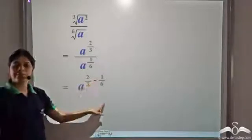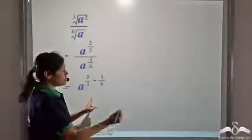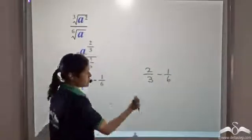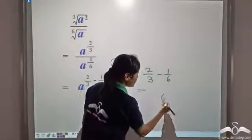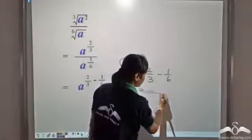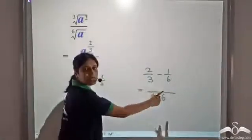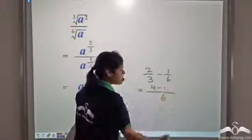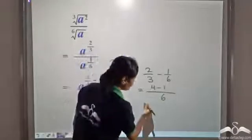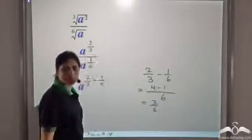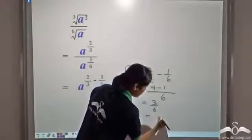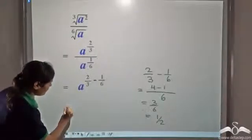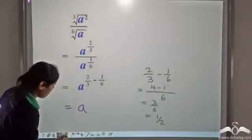Now 2 by 3 minus 1 by 6. The LCM of 3 and 6 is 6, so the denominator is 6. The denominator of the first fraction is multiplied by 2, so we multiply the numerator by 2 as well. 2 into 2 is 4 minus 1, which gives 3 by 6. And 3 by 6 is equal to 1 by 2. So this is equal to a to the power 1 by 2.